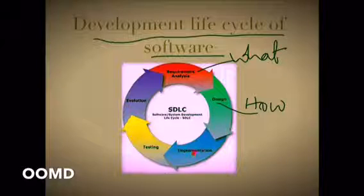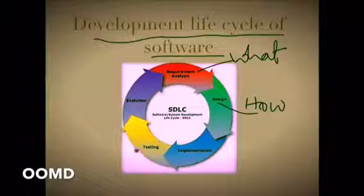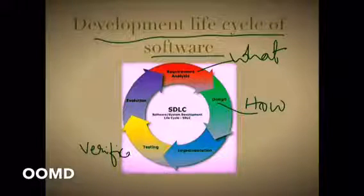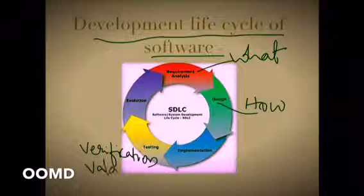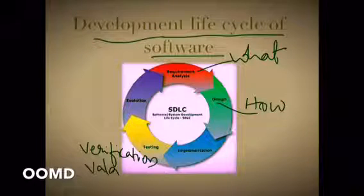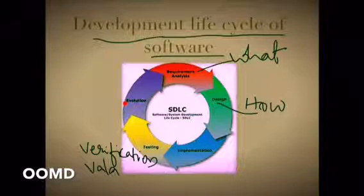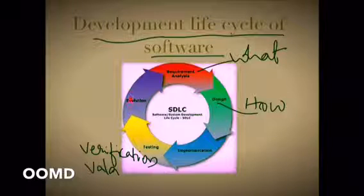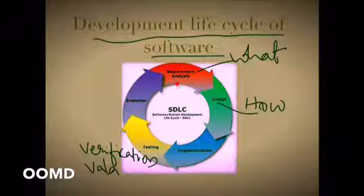In implementation, coding is done using different programming languages. Next is testing, where you will have verification and validation done. Verification and validation means whether you have developed the right product, or whether the product you have developed is the right one. Next we have evolution, where we put whatever software we have developed into deployment — meaning actual use. After using, if you want any changes, you move back to the requirement analysis stage. Like this the cycle will proceed.